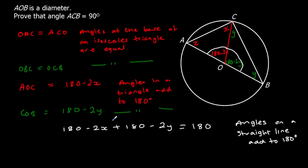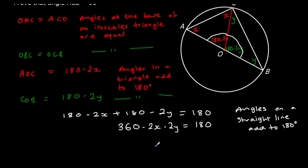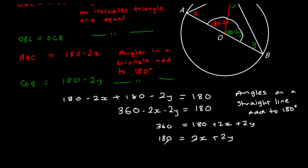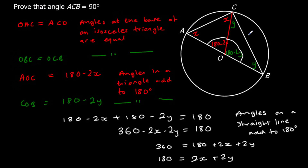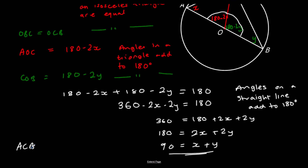Let's simplify this. We've got 180 plus 180 which is 360, minus 2X minus 2Y equals 180. Adding 2X and 2Y to both sides gives 360 equals 180 plus 2X plus 2Y. Taking 180 away from both sides gives 180 equals 2X plus 2Y. Dividing both sides by 2 gives 90 equals X plus Y. And you can see angle ACB is X plus Y, therefore ACB is 90 degrees.